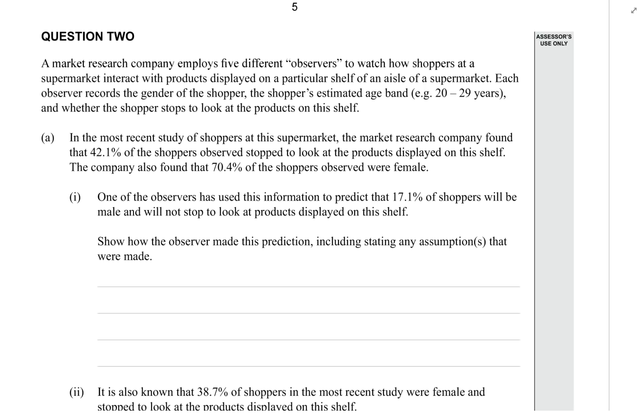In the most recent study of shoppers at the supermarket, the market research company found that 42.1% of the shoppers observed stopped to look at the products displayed on the shelf. The company also found that 70.4% of the shoppers observed were female.